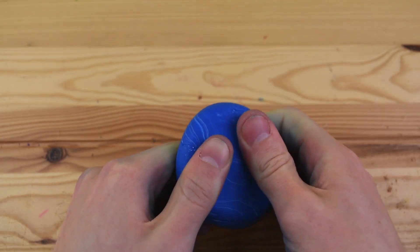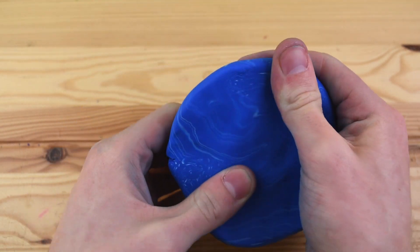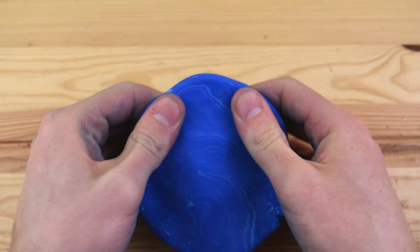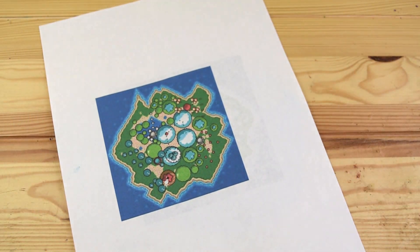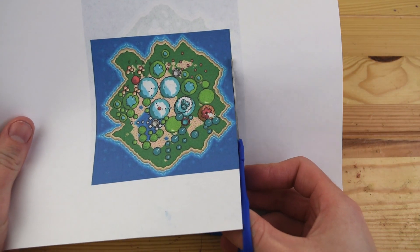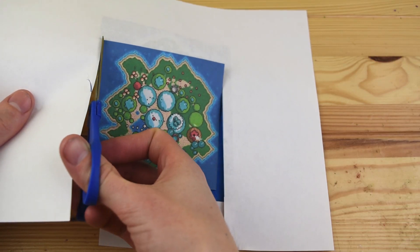We're going to start with the main water layer, and for this I've mixed together white and blue. But as you can see, I've only slightly mixed them together to keep these swirls in it, and I think that this looks really nice for a water effect.